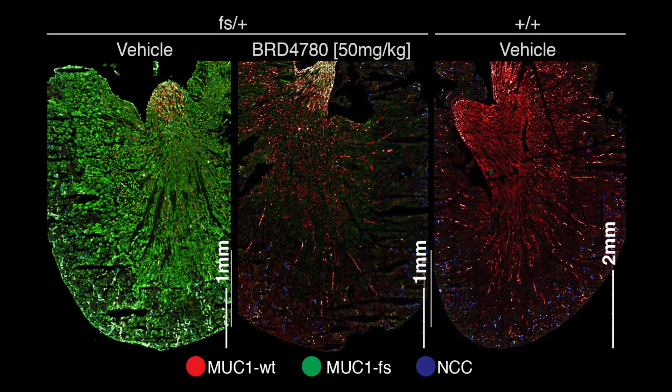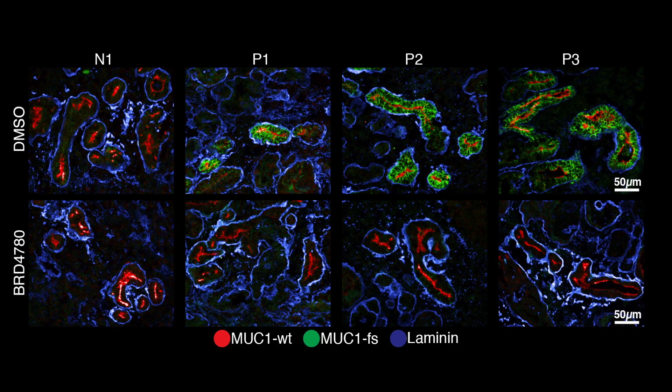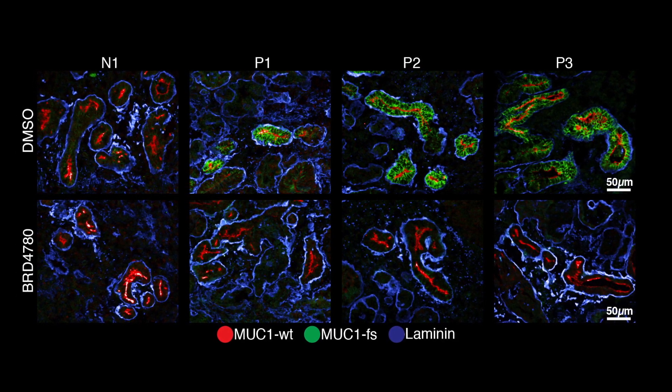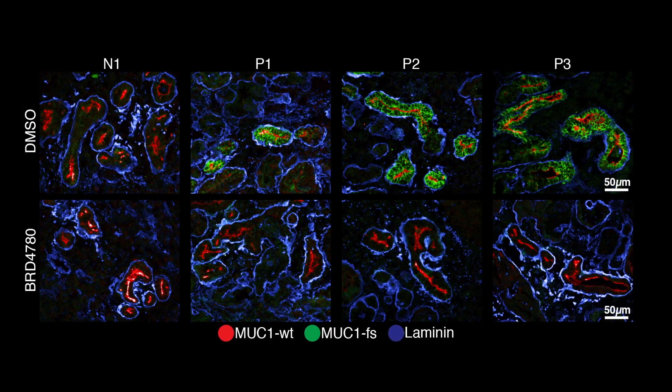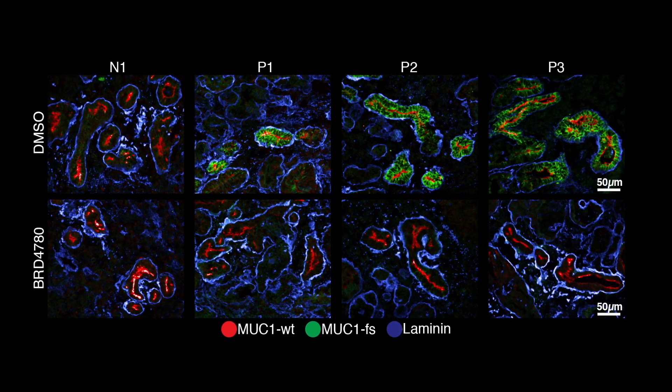After we showed that the compound had a nice effect in the mouse, we decided we had to try a human system. For that purpose, we developed human kidney organoids from three MUC1 kidney disease patients and treated these organoids with our compound. The results were amazing — the frameshift protein was totally removed from the patients' organoids.